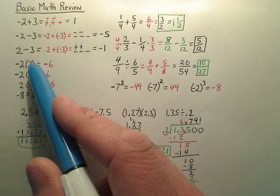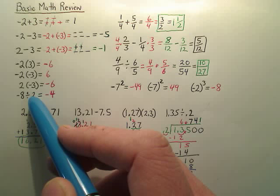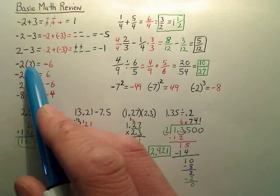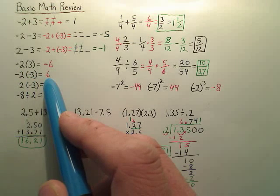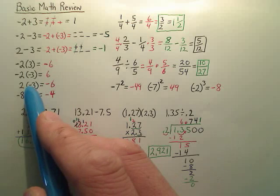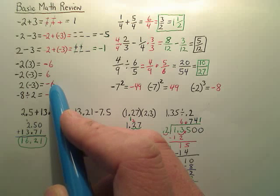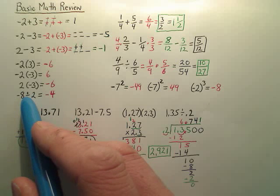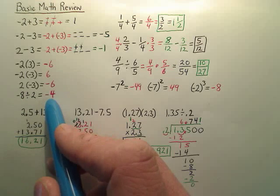Now, when you multiply, it's a completely different story. It's not what has the most that matters — it's just the type of signs. If one of them is negative, your answer is negative. If both of them are negative, the answer is positive. And division has the same properties as multiplication. If one of them is negative, your answer is negative.